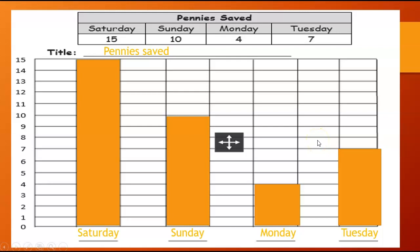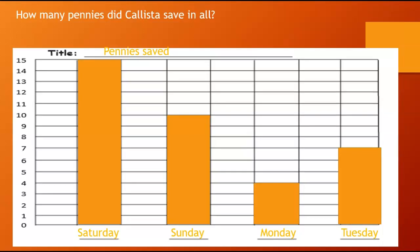So now that I have my graph completed with all of my data, I can answer some questions. I'm going to use my graph to answer these questions. Some of you are getting confused on them when we've been doing the questions previously. All you have to do is look at your graph here. This tells you the answers. You might have to do a little extra adding or subtracting, but you're getting all of your numbers and data from this graph here, because these questions have to do with the graph.